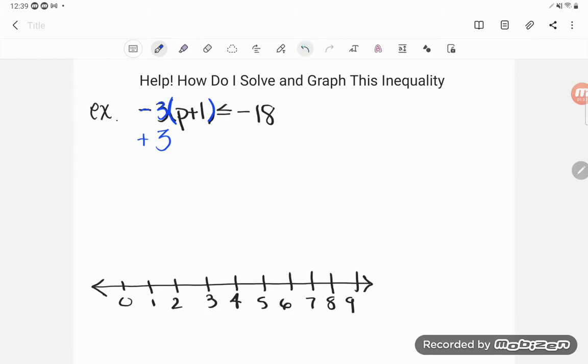If you want to get rid of a multiplier, you don't add. You do the opposite of multiplication. The opposite of multiplication is division. So one way you could start this, Savannah, is to divide by negative 3.